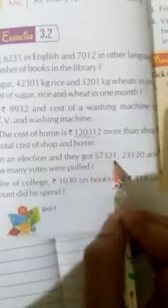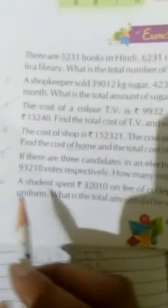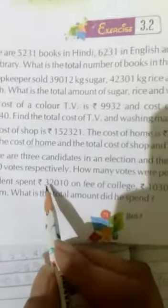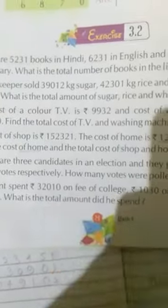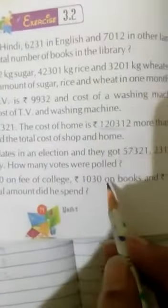There are 3 candidates in 1 election, how many votes were pulled? How many votes? Add 3. Question 6: How many students spent 3,20,010 on fee of college, 1,030 on books and 510 on uniform? What is the total amount? How many students spent? Add 3.